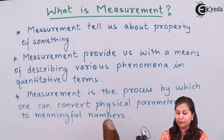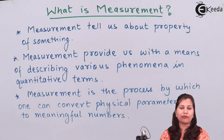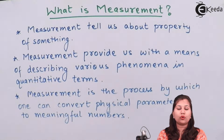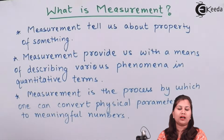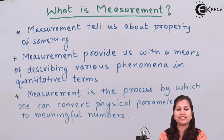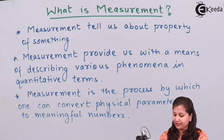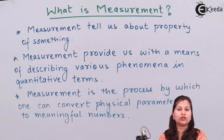Measurement is also the process by which one can convert physical parameters to meaningful numbers. For example, if we want to find out how much water is in a glass, we can give an approximate idea. But if we want to actually measure it, we say 200 ml of water is there. So measurement converts physical parameters into meaningful numbers.